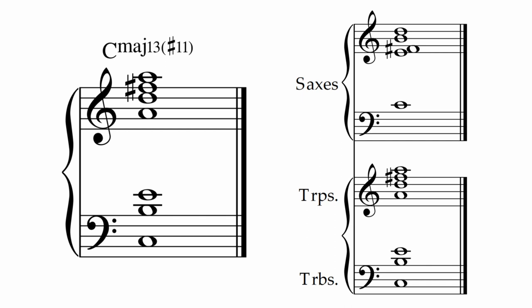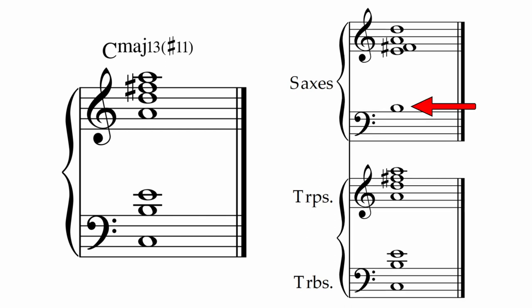And now the full tutti. That sounds good. Another option would be to swap the root for the seventh, and then change the higher seventh to a thirteenth. Here's what that sounds like, with just the saxes.